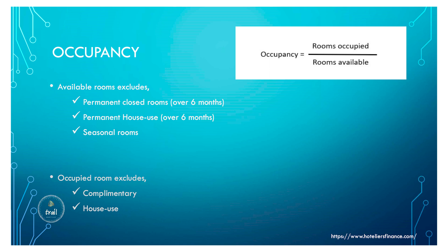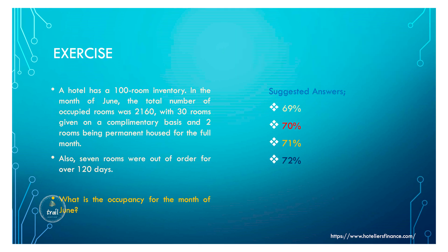The occupancy formula is simple: rooms occupied divided by rooms available. Available rooms exclude permanently closed rooms (over six months), permanent house use (over six months), and seasonal rooms. For occupied rooms, we exclude complementary and house use rooms. Once adjusted, occupancy can be calculated.